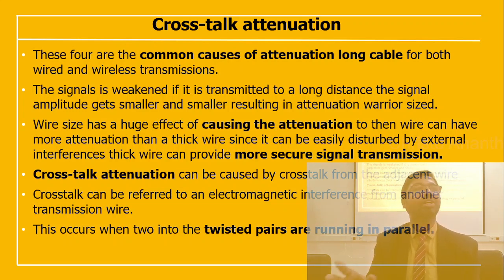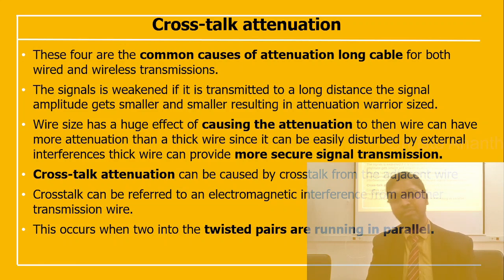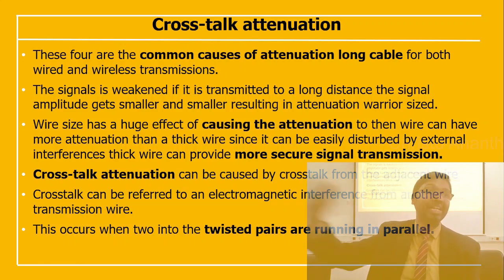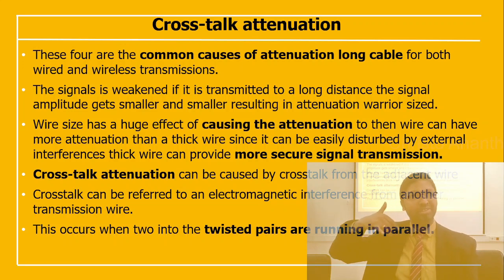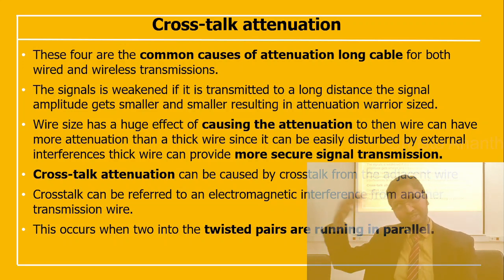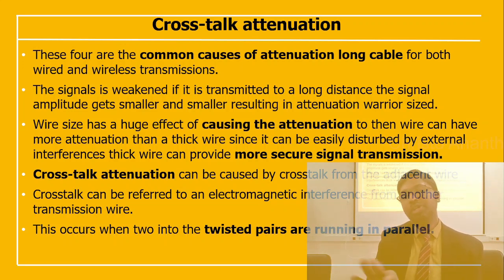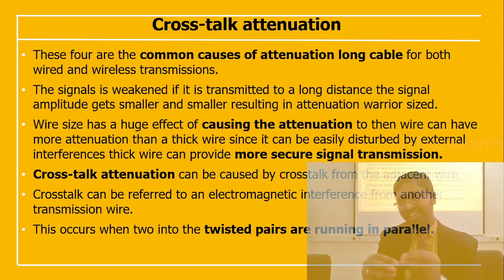Crosstalk attenuation can be caused by electromagnetic interference from an adjacent transmission wire. This occurs when two twisted pairs are running in parallel — similar to hearing someone else's conversation on a phone line.